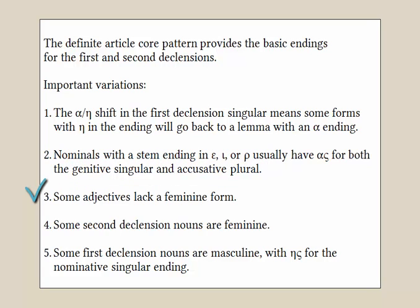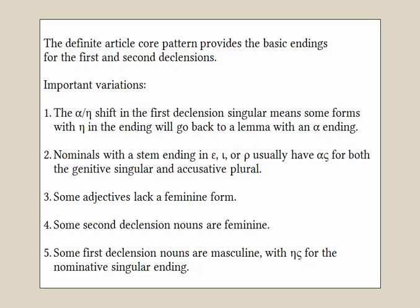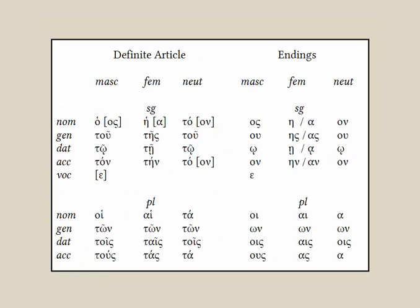And the fact that some nominals that have a stem ending in epsilon, iota, or rho have an alpha-sigma in two places — the genitive singular and the nominative plural. In this video we saw some adjectives lack a feminine form — those two-termination adjectives. We saw some second declension nouns are actually feminine, like he hodos, but there were no new endings in any of that to learn. And finally we saw the first declension nouns that are masculine and have an eta-sigma for the nominative singular ending. The two variations to pay the most attention to are the alpha-sigma showing up in two places and especially the use of eta-sigma for the nominative singular in that first declension masculine paradigm. Learning this core pattern and its basic variations will prepare you to recognize the article and most first and second declension words you meet — often half the words in a passage. In the next video we move on to the third declension.